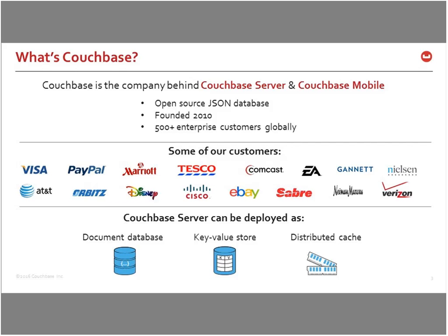Historically, Couchbase was often deployed as either a distributed cache or a key-value database. But over the last couple of years, almost all of our deployments have been as a document database with queryability, indexing, and views on top of documents.